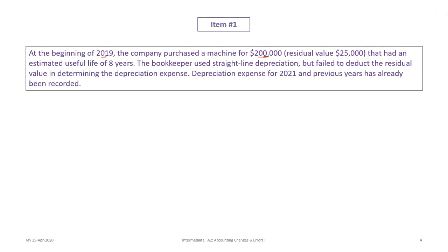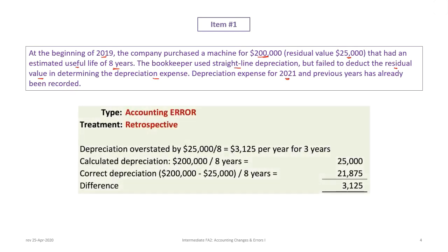For Item 1, at the beginning of 2019 the company purchased a machine for $200,000 with a residual value of $25,000 and an estimated useful life of eight years. The bookkeeper used straight-line depreciation but did not deduct the residual value. Depreciation expense for 2021 and all previous years have already been recorded, meaning the depreciation in 2019, 2020, and 2021 are all incorrect. This is an accounting error, and the treatment is retrospective.